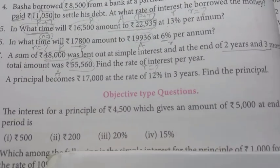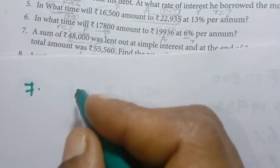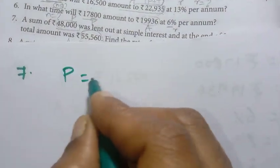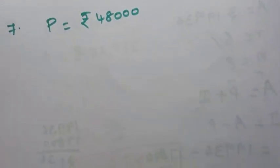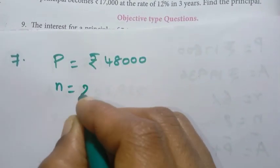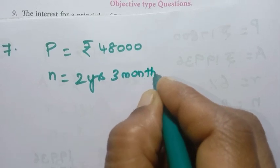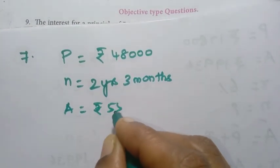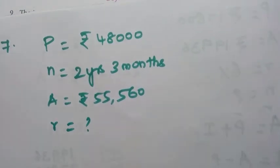So principal P = Rs.48,000. Number of years is 2 years and 3 months. Amount to be paid is Rs.55,560. Rate of interest we need to find out.